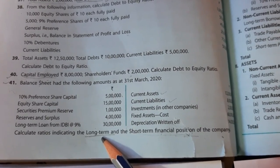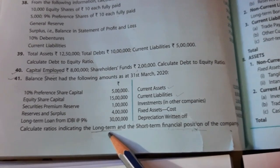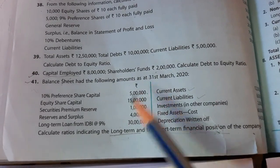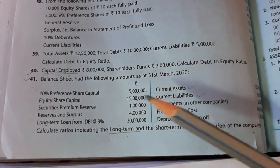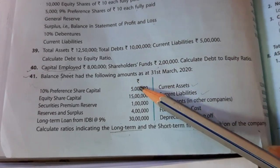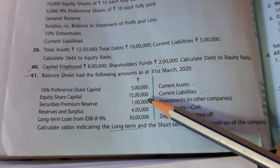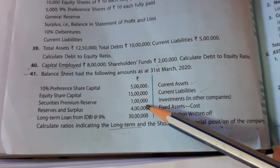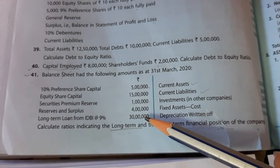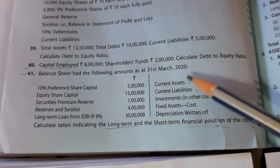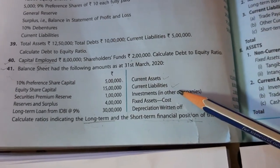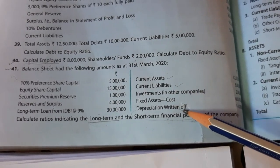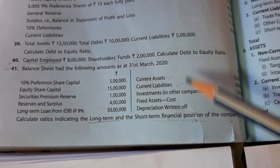Equity means shareholders fund. The items given include: 10% preference shares, equity share capital, security premium, reserves and surplus, long-term debts, current assets, current liabilities, investments, fixed assets, depreciation, and return. From these, the long-term debts are the 30 lakh long-term loan from IDBI at 9%. So debts = 30 lakh.